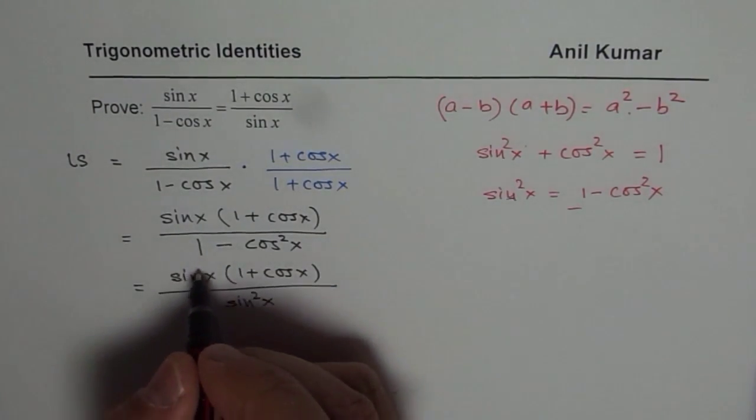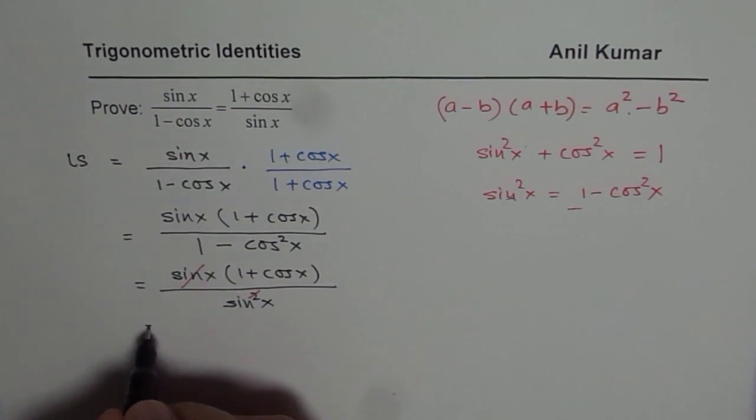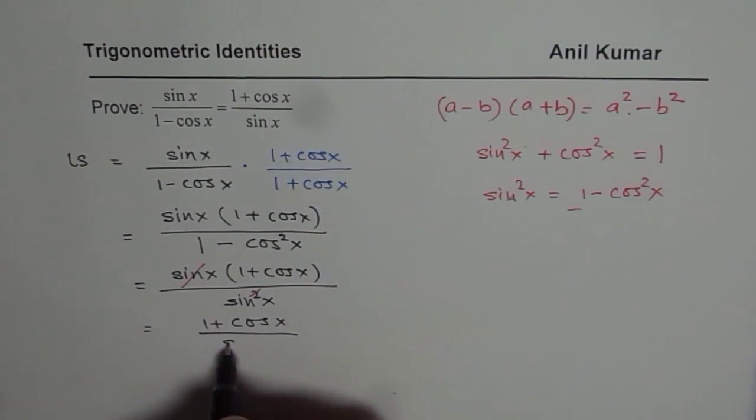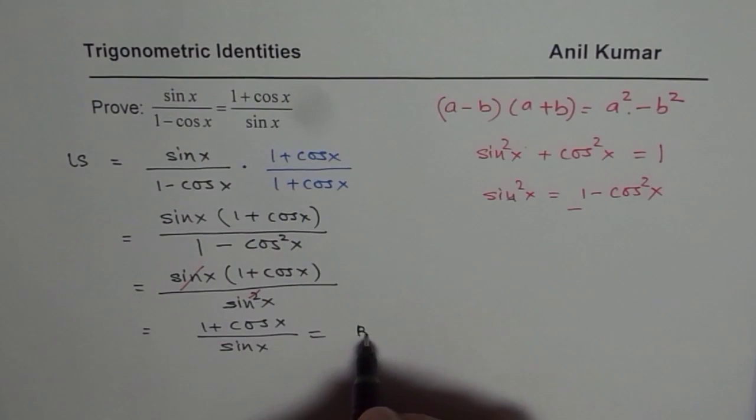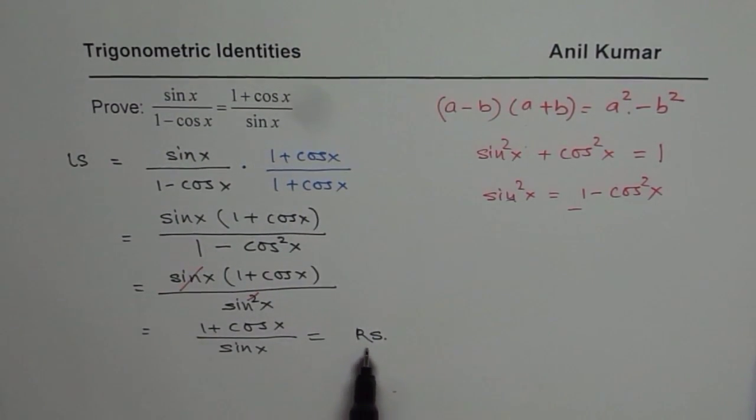Now, you can cancel sin x, sin x. And what do you get? You get 1 plus cos x over sin x, which is what you want, which is on your right side. So, we have proved that left side is equal to right side, and therefore, this is an identity. I hope that helps. Thank you.